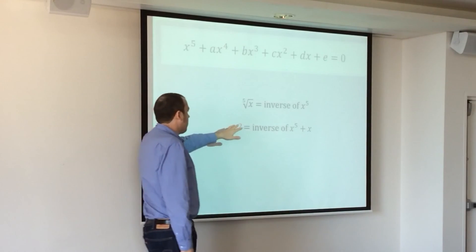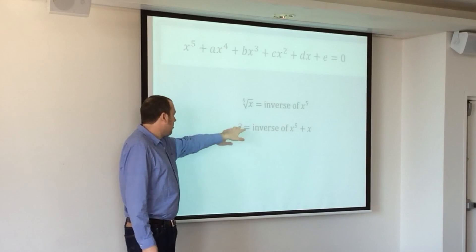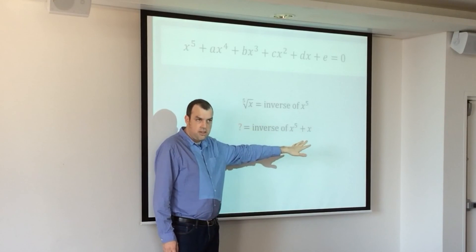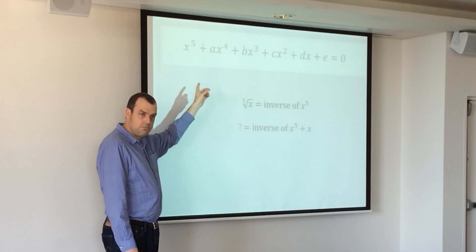The fifth root of x is the inverse of x to the 5, correct? If we just had some notation that was the inverse of x to the 5 plus x, then we could write the solution to that formula. Make sense?